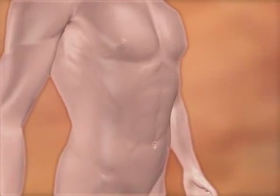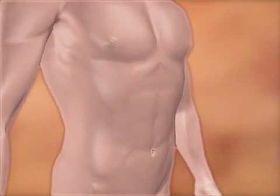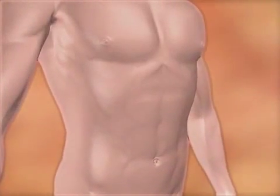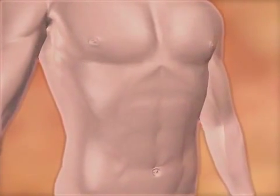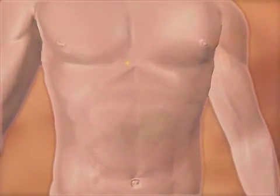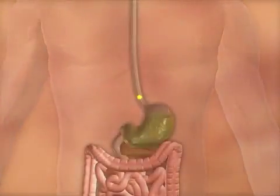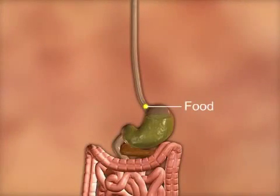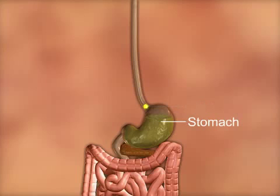Diabetes type 2 is the most common form of diabetes. Although it can occur at any age, it is more common in people who are overweight, sedentary, and over middle age.